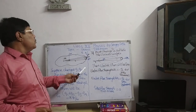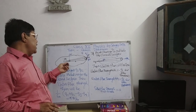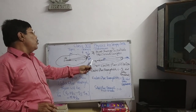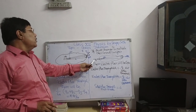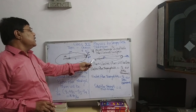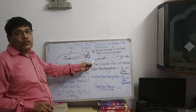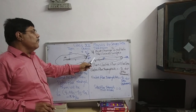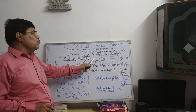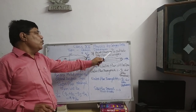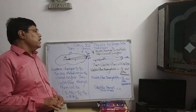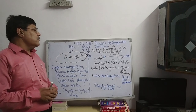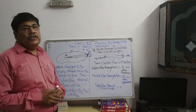Now let us suppose that the point charge Q is outside the closed surface. Then what will be the electric flux through it? If the point charge Q is outside the closed surface, then the electric flux will be zero.